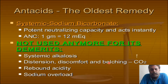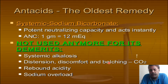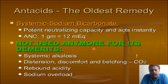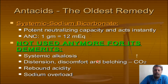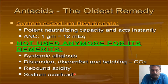The first antacid was systemic sodium bicarbonate - it has a potent neutralizing capacity of almost 12 milliequivalents and it acts instantly. But it should not be used for long periods; on an SOS basis it is okay. If taken long term, it causes alkalosis, distension, discomfort, and belching because of increased carbon dioxide production. It does not decrease the etiology of acid production, and in the long term may cause sodium overload and complications of hypernatremia.